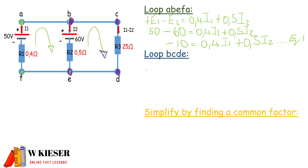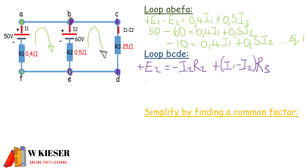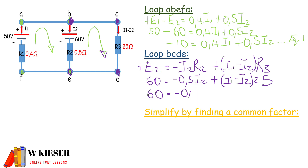We end up with positive E2, which equals minus I2·R2 plus I3·R3. Now I3 is the same as I1 minus I2. The battery voltage is 60 volts, R2 is 0.5 ohms, so it's minus 0.5·I2 plus (I1 minus I2) times 25 ohms. Multiplying out the bracket gives us positive 25·I1 minus 25·I2.